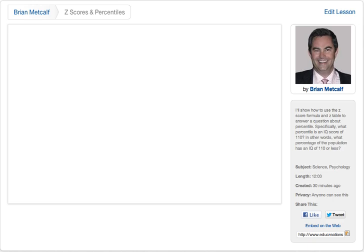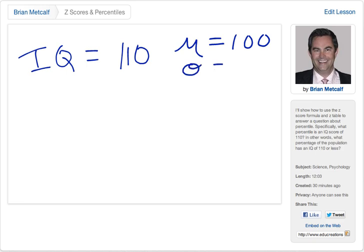So let's say that we have someone with an IQ equal to 110. Now, what we know about the population, the population mean μ is 100, and the standard deviation for the population σ is equal to 15. Now, if you don't know what these Greek symbols that I'm using here are, you need to go back and check some other notes. So that's what we know, that the population mean is 100 and we're asking about an IQ of 110.